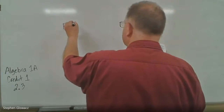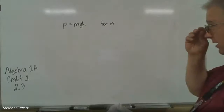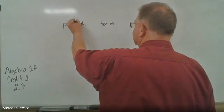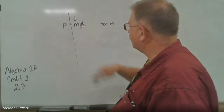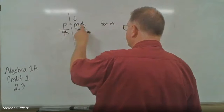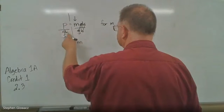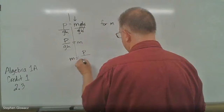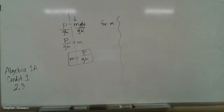This is P equals MGH, and we want to solve for M. The important thing is, what's going to be next to the equation is the variable they want you to solve for, which in this case is M. M is being multiplied by G and H, so we need to get rid of the G and the H. It's all multiplication, so we just divide by GH on both sides. The G's and the H cancel out, so we just have M equals P over GH. So, this one was just a one-stepper.